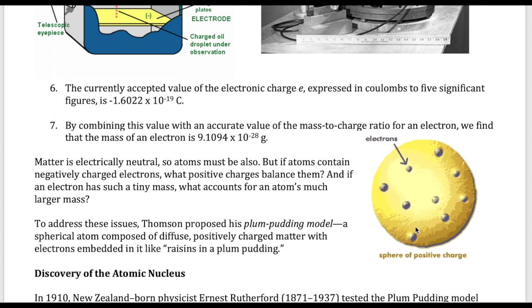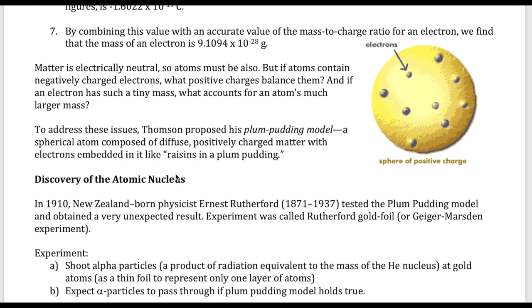And so Thomson proposed this plum pudding model, which is shown right here. And what this is, is just that the electrons are there, like in a chocolate chip cookie dotted all around. And this yellow cookie dough here represents a sphere of positive charge that balances out all the electrons.